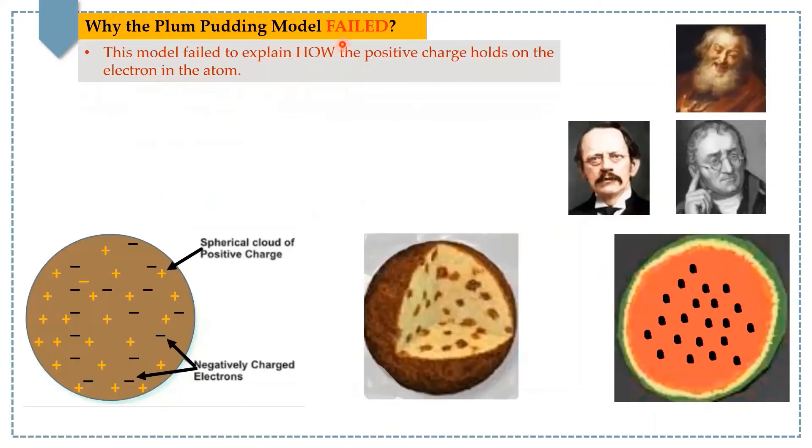Let's have a look now at the reasons why the plum pudding model failed. This model failed to explain how the positive charge holds on the electron in the atom. It means it failed to explain the atom's stability.